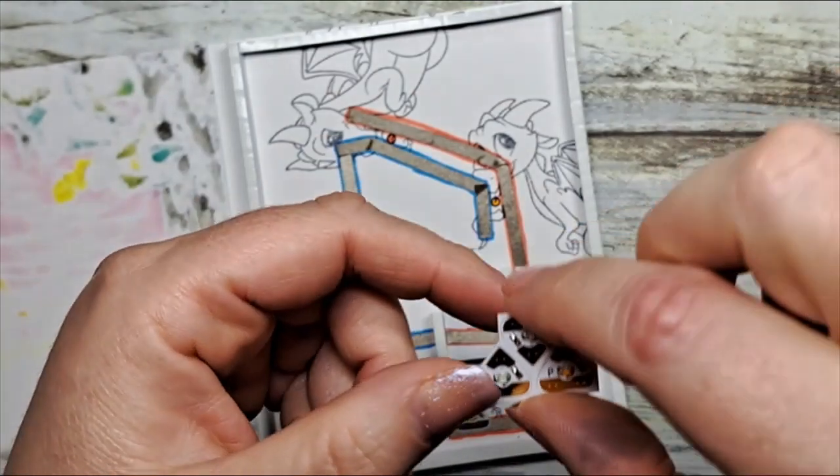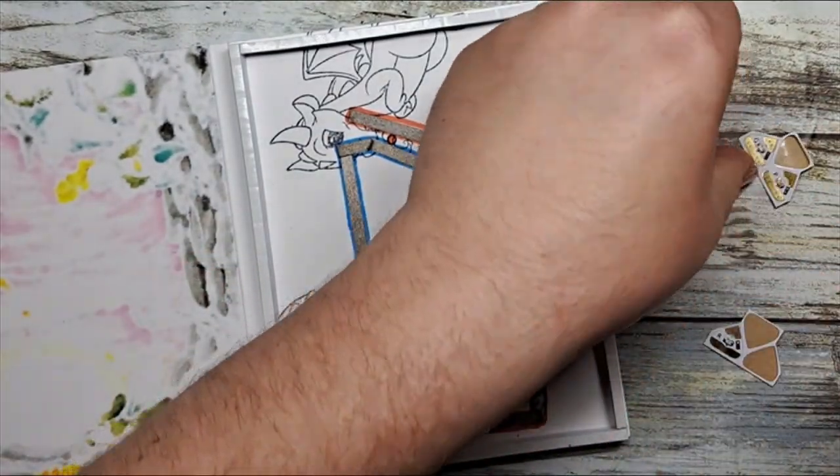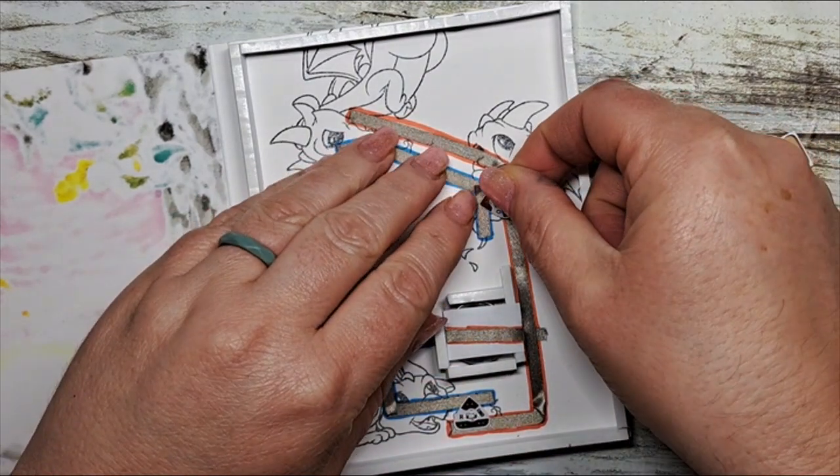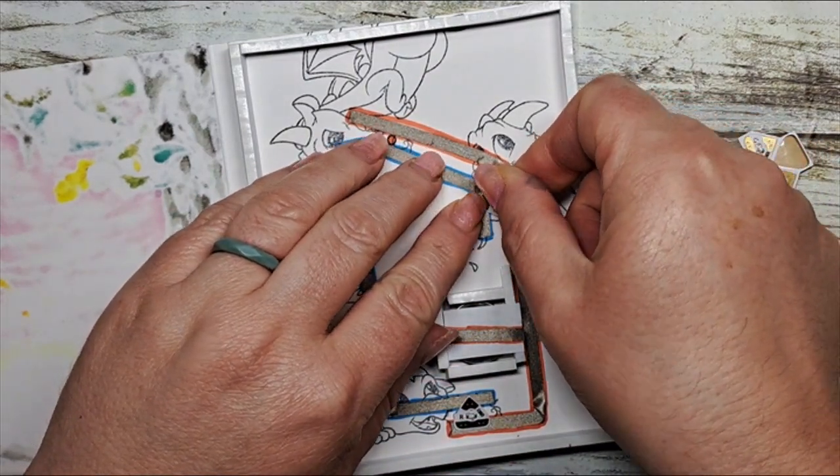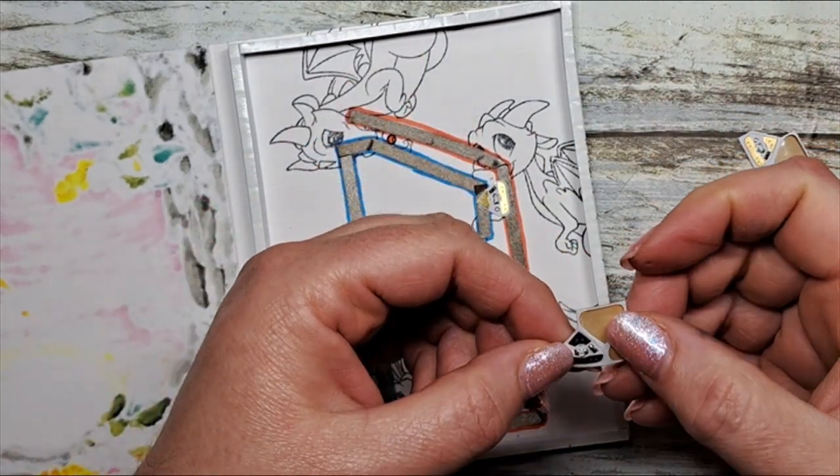All it is is a peel and stick. Just make sure that you place your stickers on in the right orientation. Each sticker is clearly labeled with a positive and negative indicator.